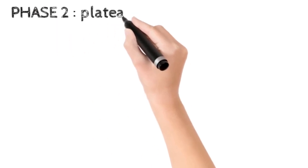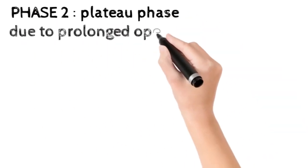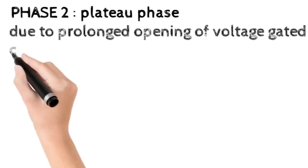Phase 2 is the plateau phase which is due to the slower but prolonged opening of voltage-gated calcium channels.